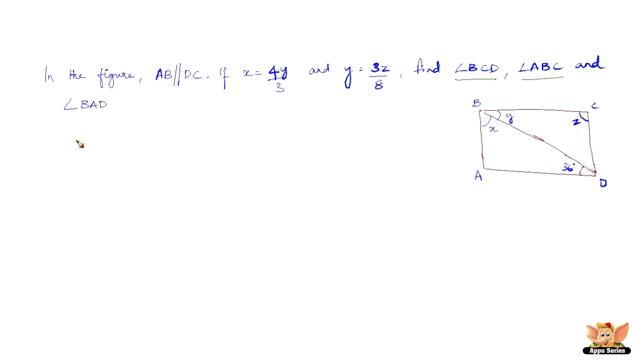So now, since AB is parallel to DC and the transversal BD intersects them at B and D respectively, we have angle ABD equals angle BDC, and angle CBD equals angle ADB. If you can recall parallel lines and transversals, you can understand that these are equal because they are alternate angles. Angle ABD is alternate to angle BDC. This angle is alternate to this angle.